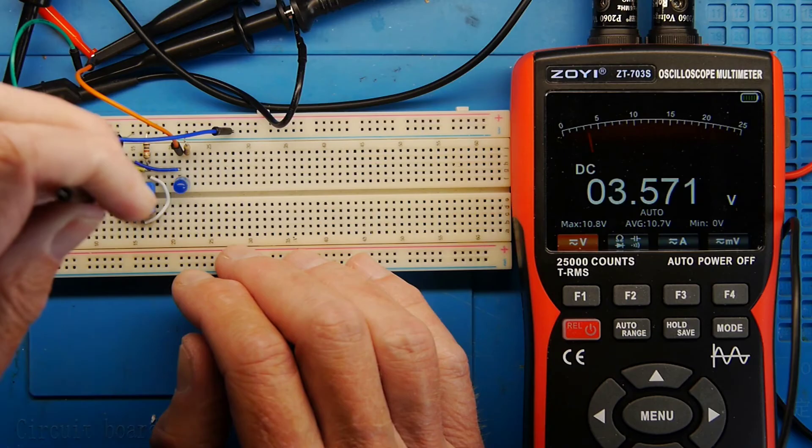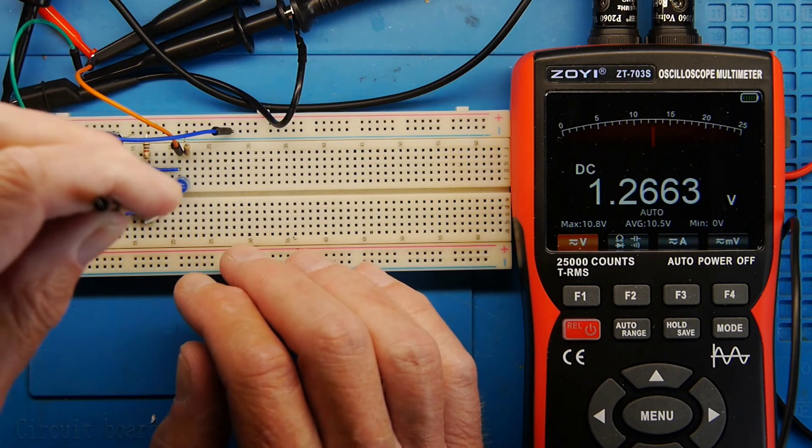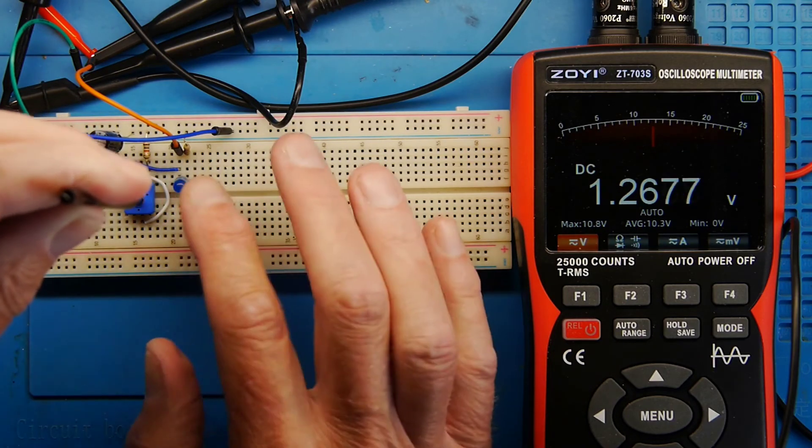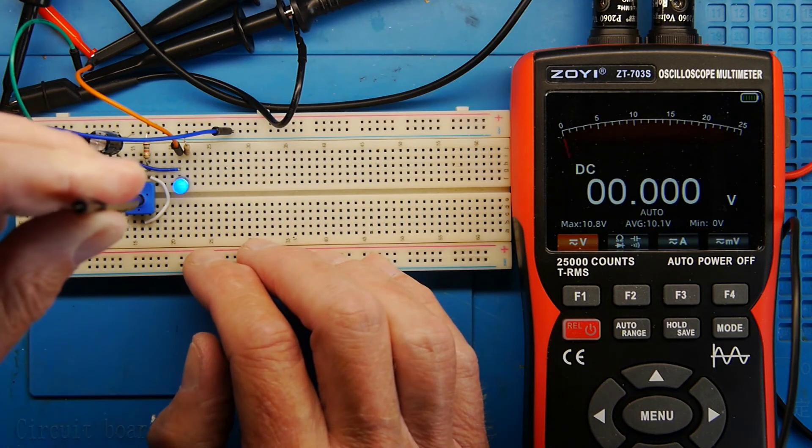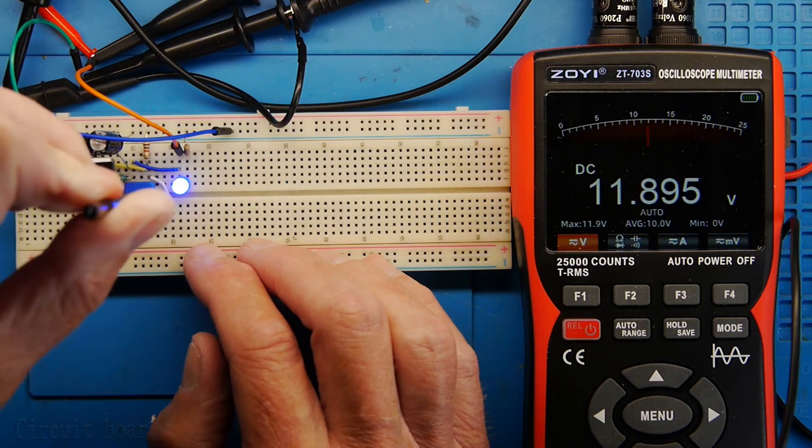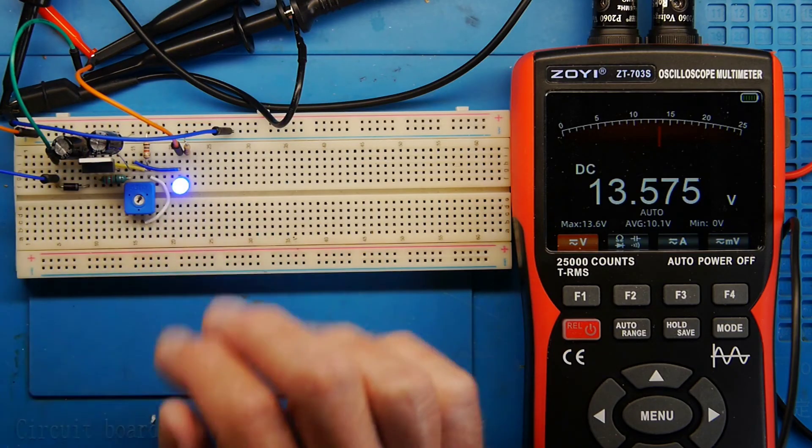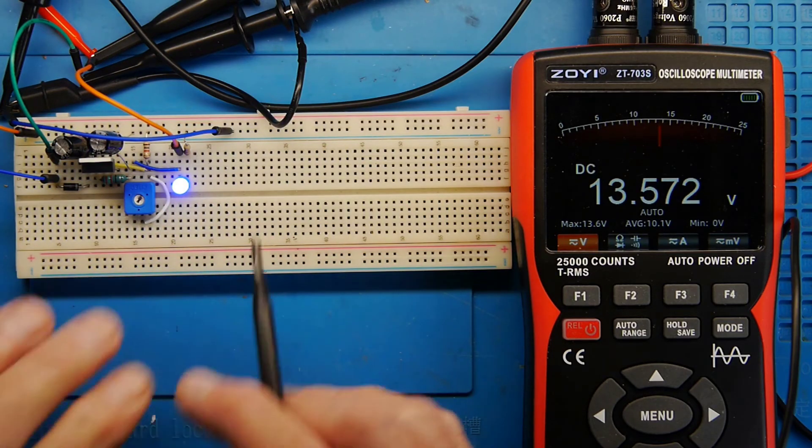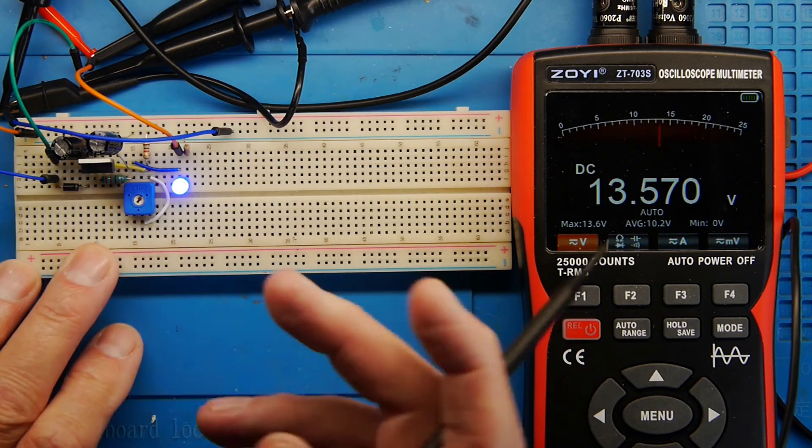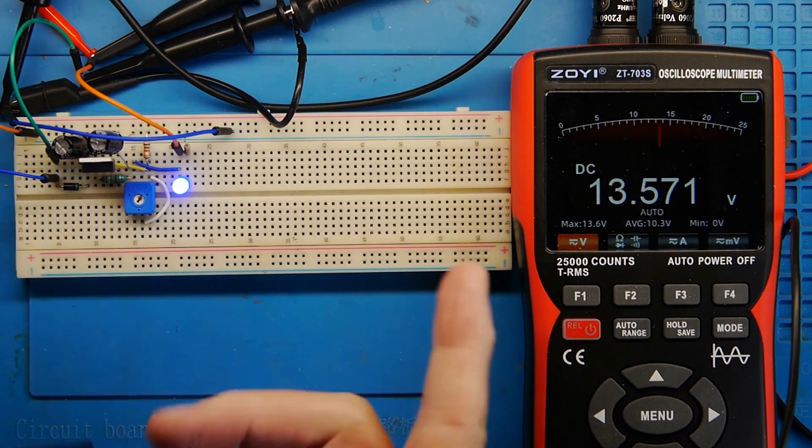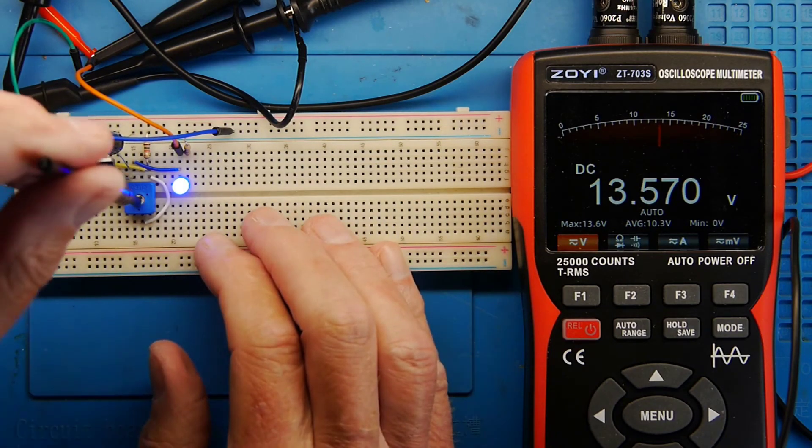So you can see we can lower it right down, we can get down to about just under 1.3 volts. Obviously the LED isn't lit at that point and then we can go right up if I turn it as far as it'll go about 13.5 volts. If you think about the fact you've got 24 volts AC halfway rectified, that's pretty good to get 13.5 volts out of there.